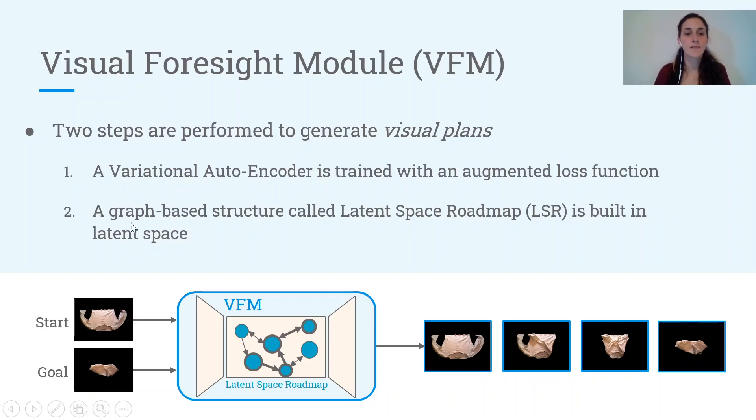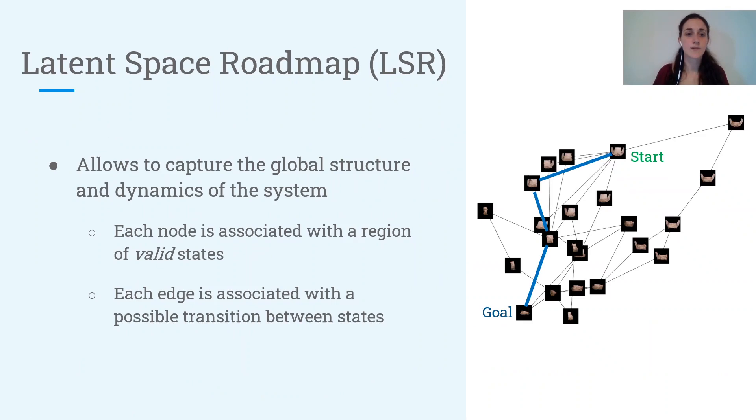And then we build a graph-based structure in the latent space that we call latent space roadmap. And in particular, the latter allows to capture the global structure and dynamics of the system.